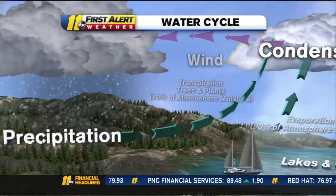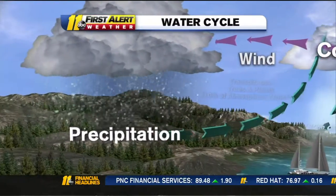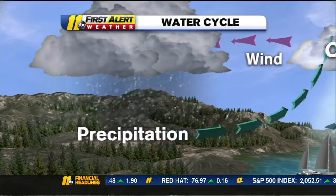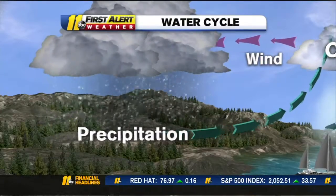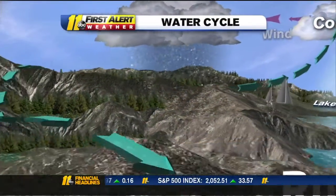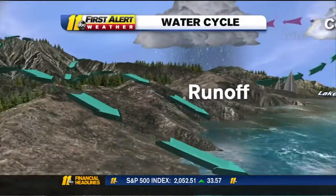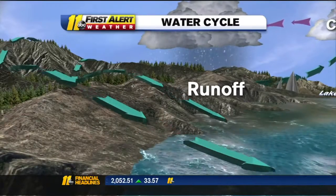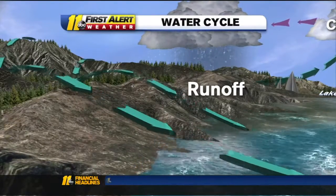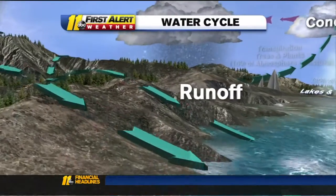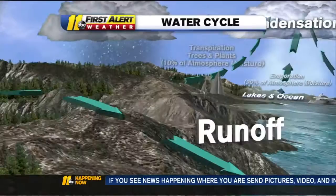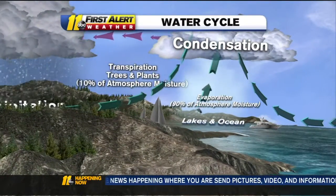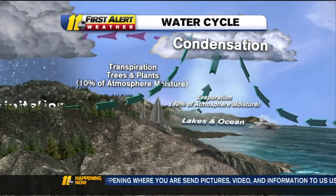That moisture goes up into the sky, condenses in the clouds, and eventually gathers enough to make precipitation — rain or sometimes snow — that falls to the ground. It runs back off into streams, creeks, rivers, and eventually the oceans, and also into the soil where plants pull the water up again.